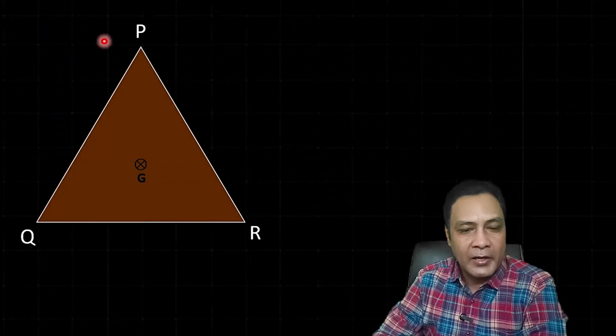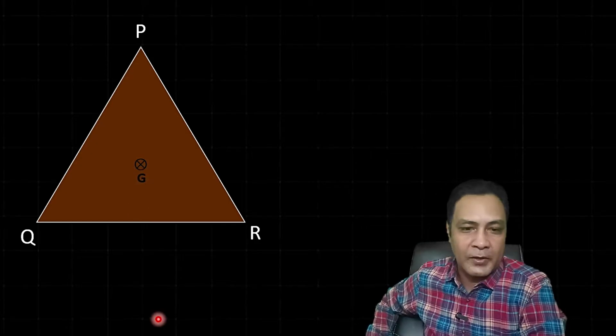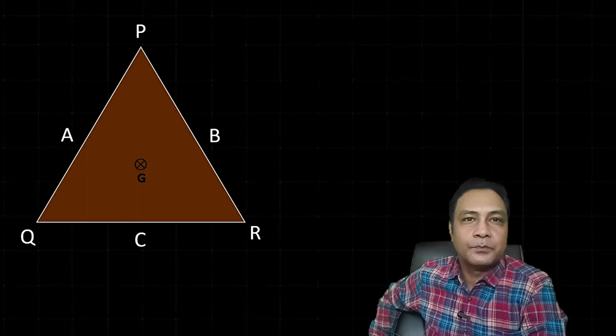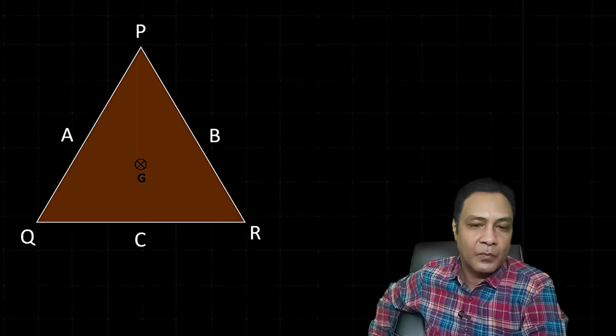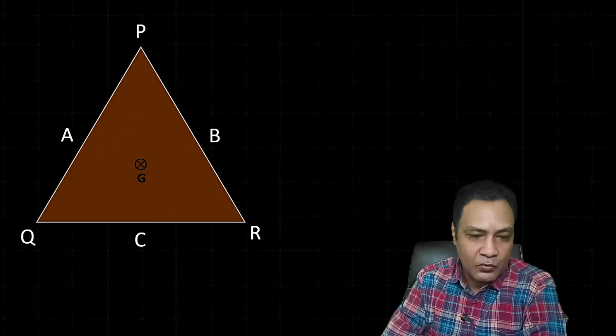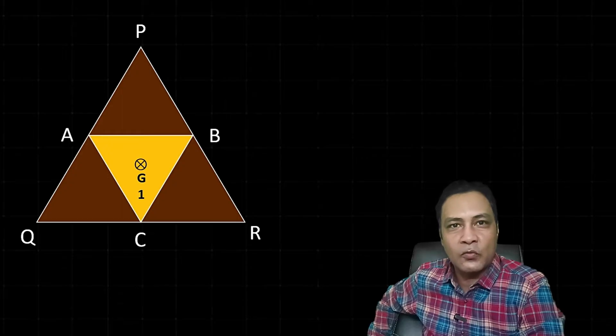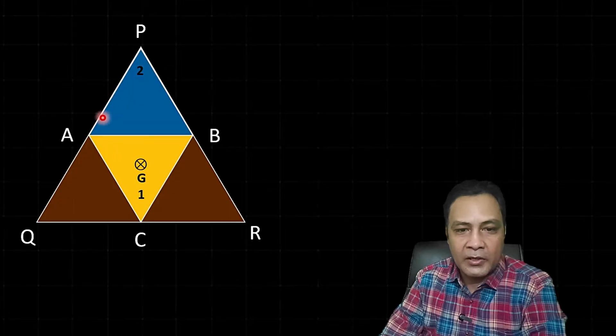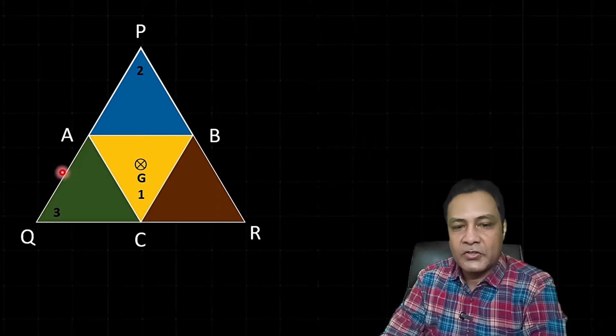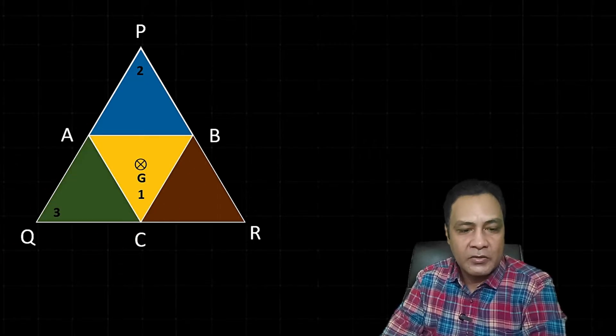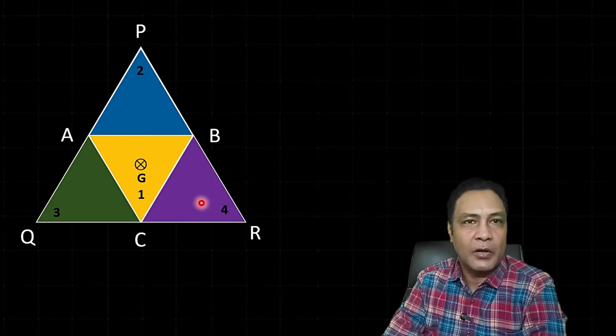Let me mark three points A, B, C where A is the midpoint of PQ, B is the midpoint of PR, and C is the midpoint of QR. Joining AB, BC, and CA divides the whole equilateral triangle into four congruent equilateral triangles: triangle ABC (part 1), triangle PAB (part 2), triangle AQC (part 3), and triangle BCR (part 4).